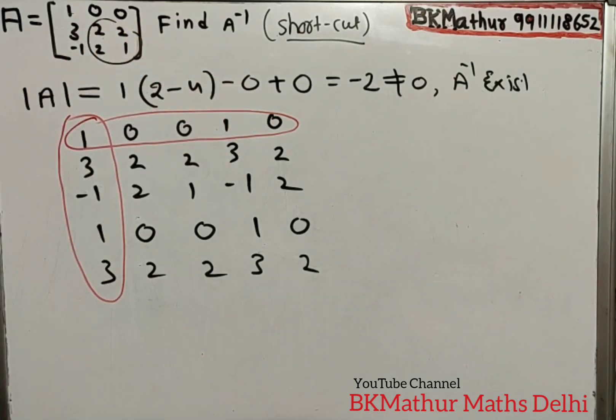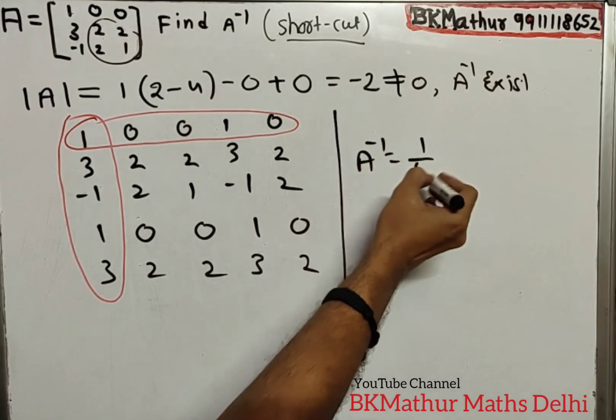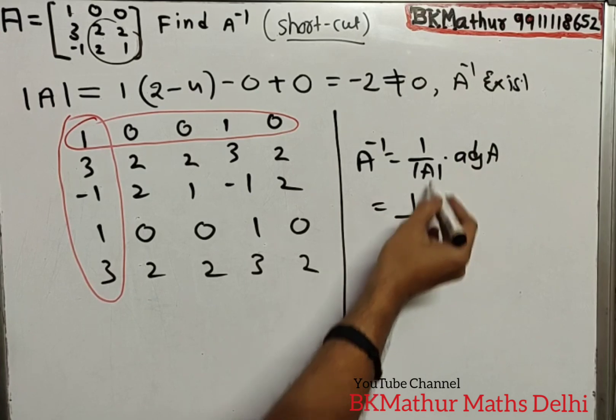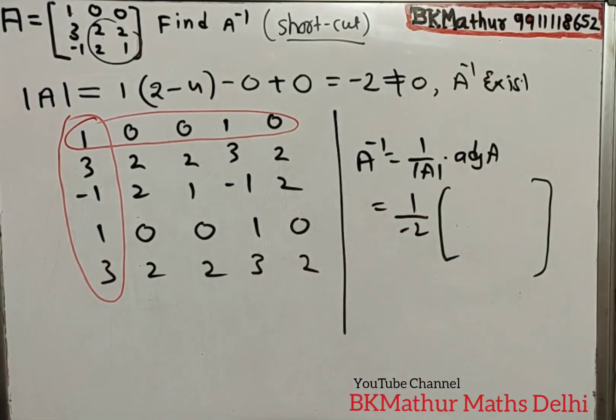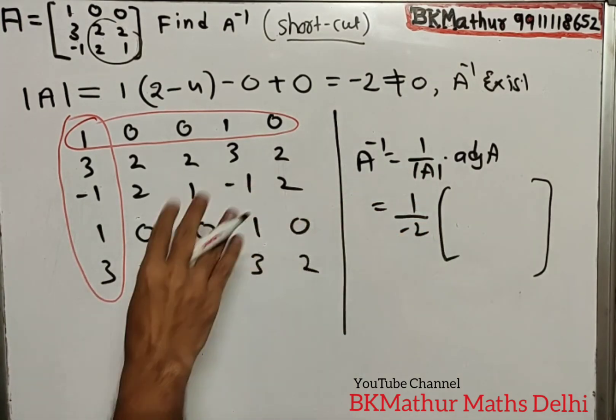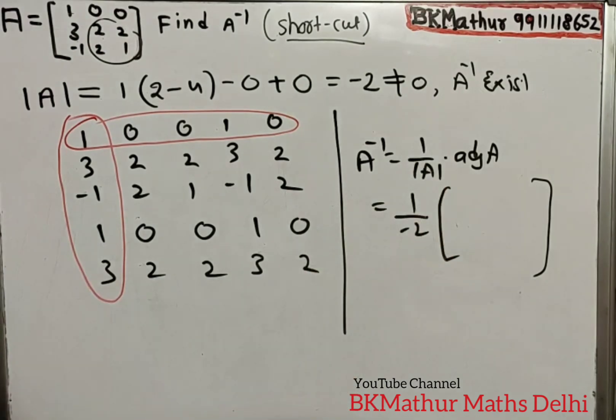Now your answer is coming. As you know, A inverse is 1 upon determinant A into adjoint of A - this is the formula. 1 upon minus 2. This is the shortcut to find adjoint. Actually, this is the formula for inverse, but indirectly inverse will come out after putting the values in this formula.